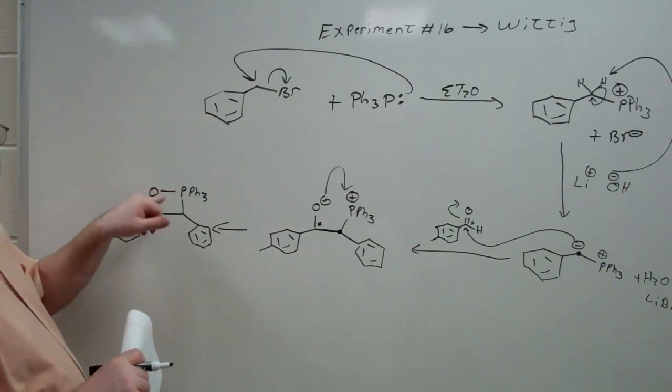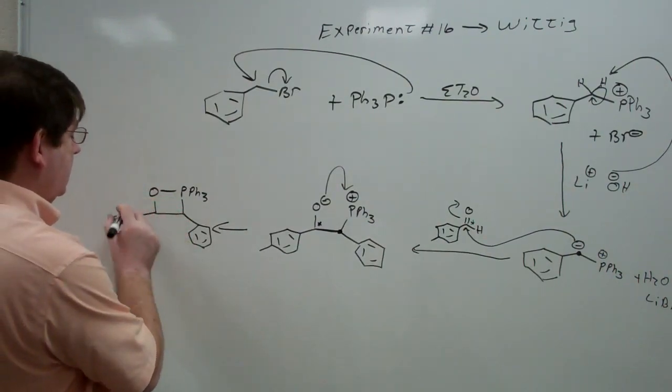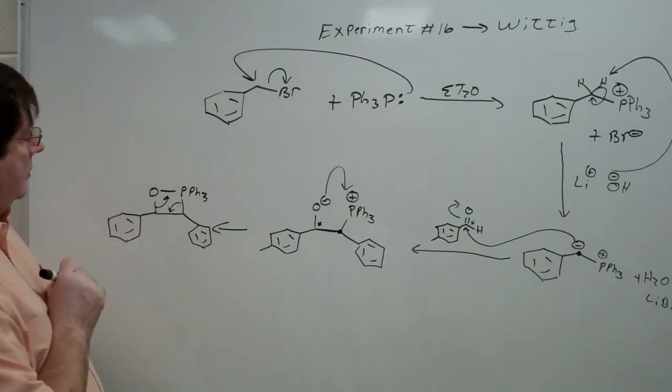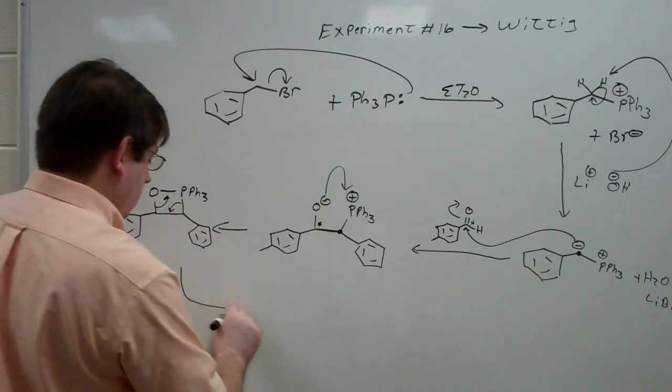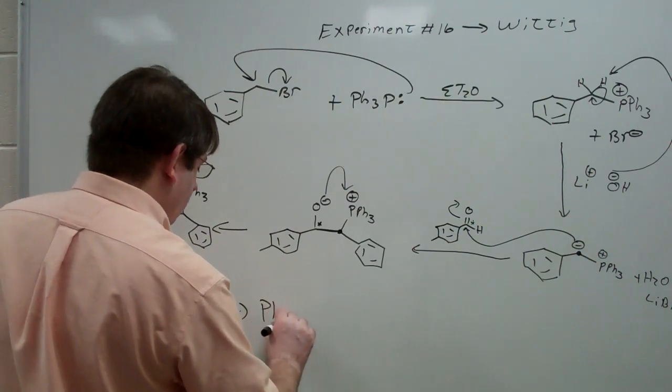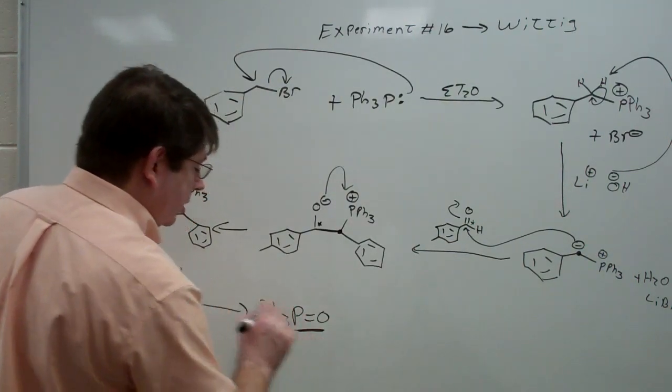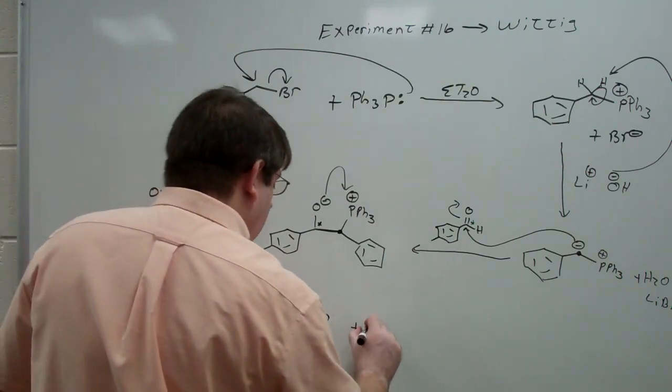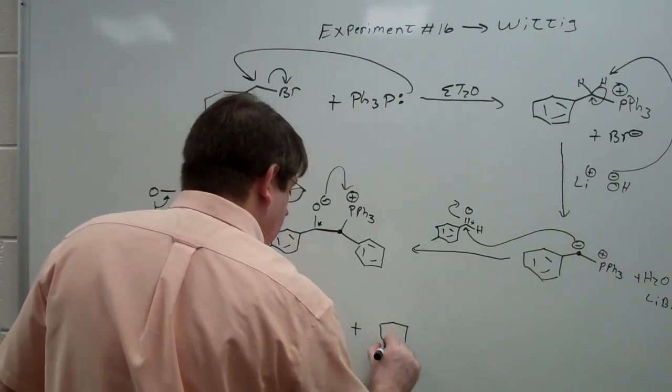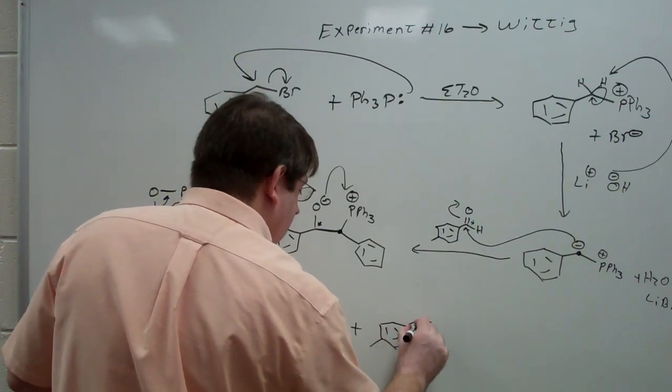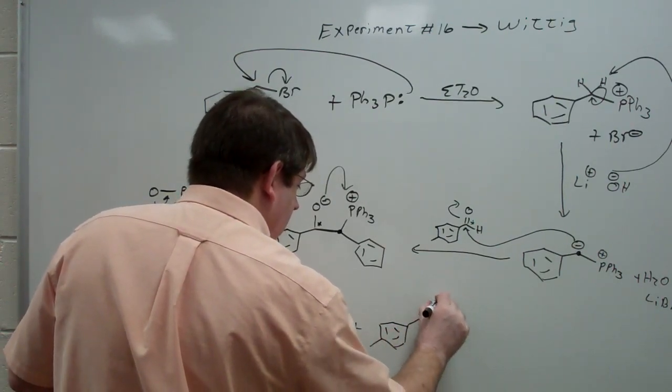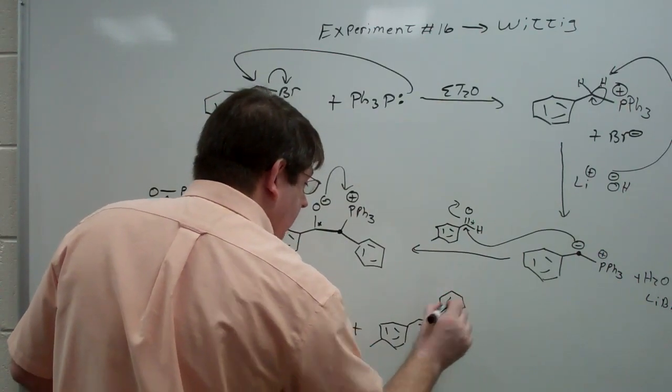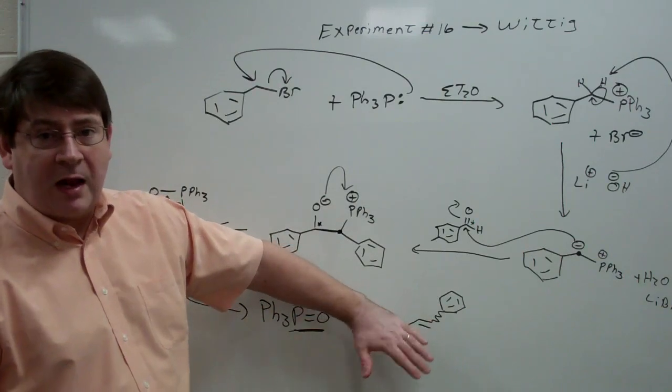And the way that we believe that happens is that you end up going from the so-called betaine intermediate to the oxaphosphetane. So it's a four-membered ring kind of closed up here. And then what happens is these electrons fold in on themselves, pushing like this, and you end up with the triphenylphosphine oxide, which has that strong phosphorus-oxygen double bond, which is the driving force, plus the alkene. And I'm going to draw that again with a squiggly line, indicating that there is poor stereoselectivity. You're going to end up with a mixture of cis and trans.